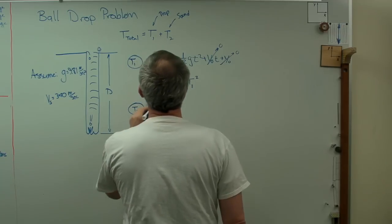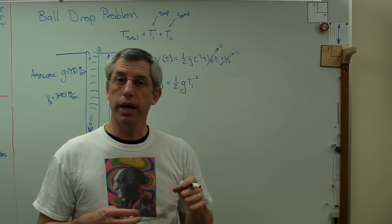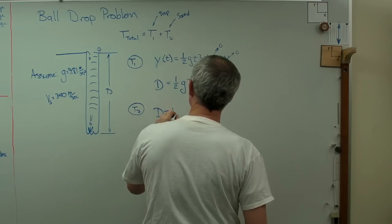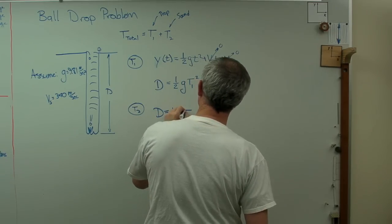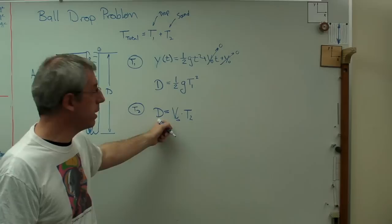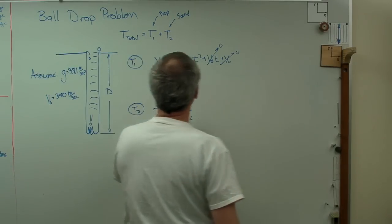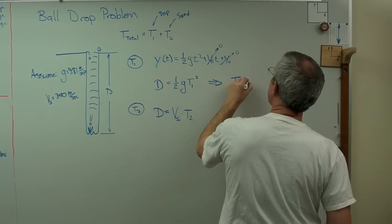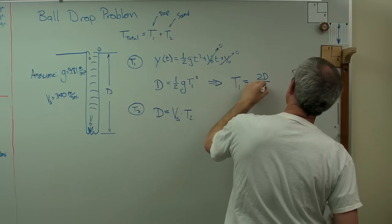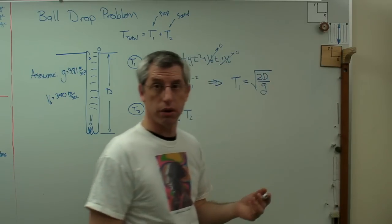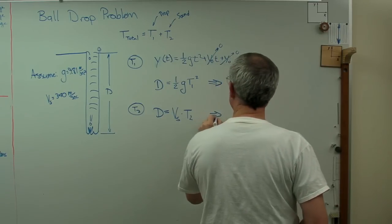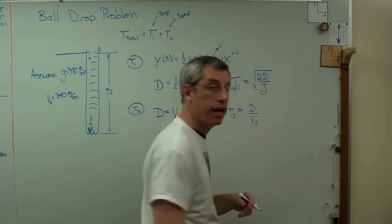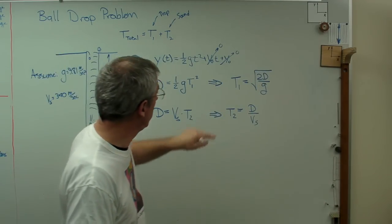For t2, I'm going to write out an expression that relates time and distance to the speed of sound. The distance traveled is the speed times the time, so the distance traveled on the way back up equals the speed of sound times time two. So t1 equals the square root of 2d over g, and t2 equals d over vs.